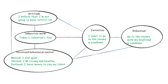First of all, we have a behavior — for example, going to the cinema with my boyfriend during a pandemic. But before that, I have an intention: I want to go to the cinema during the pandemic. Before this intention, I have an attitude — that is, I believe that I'm not going to get COVID-19.